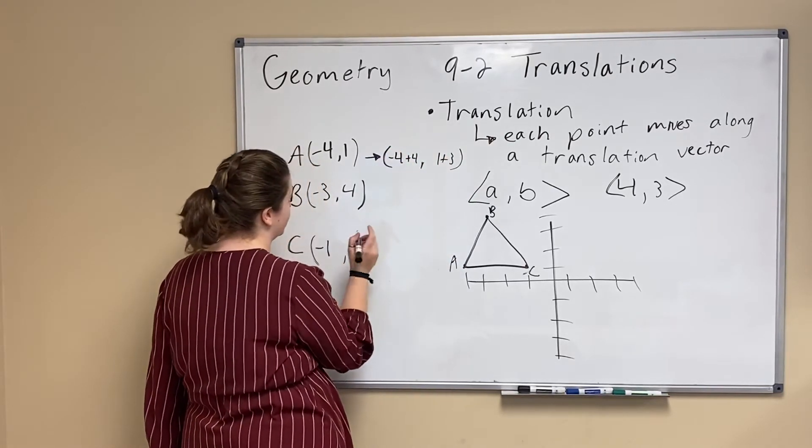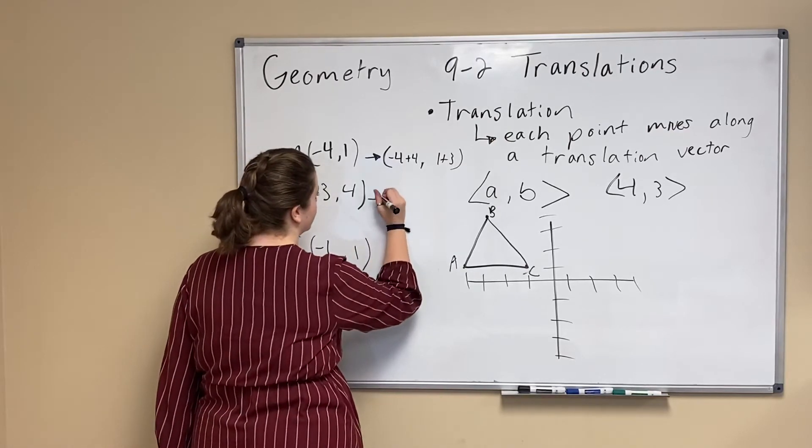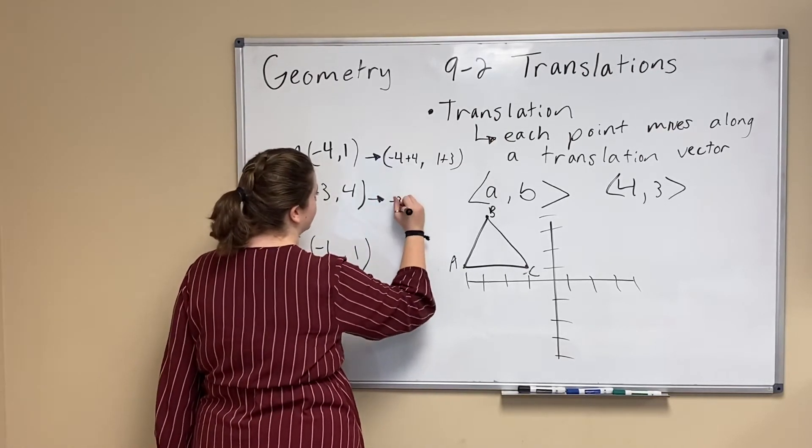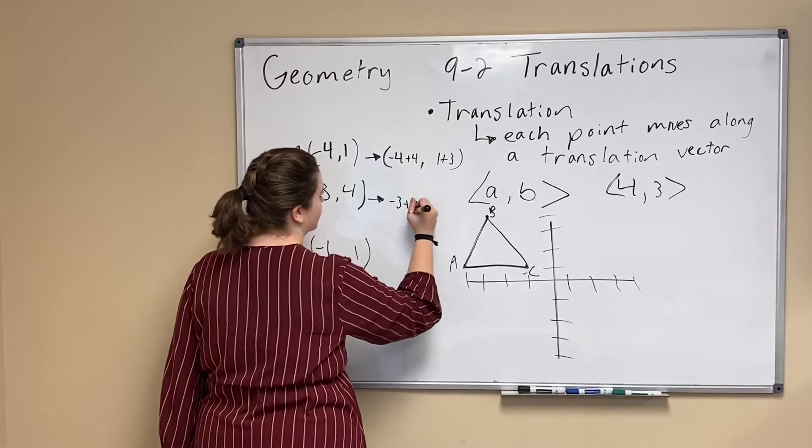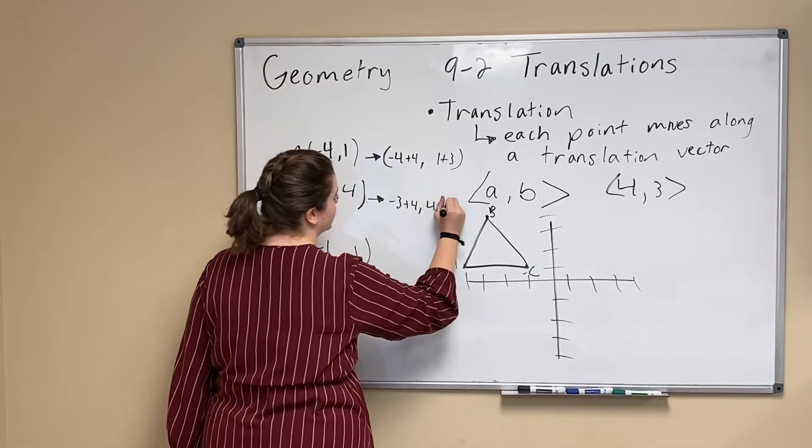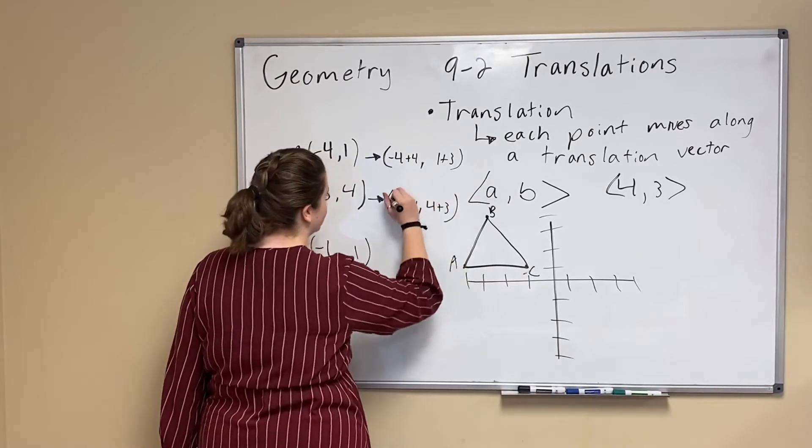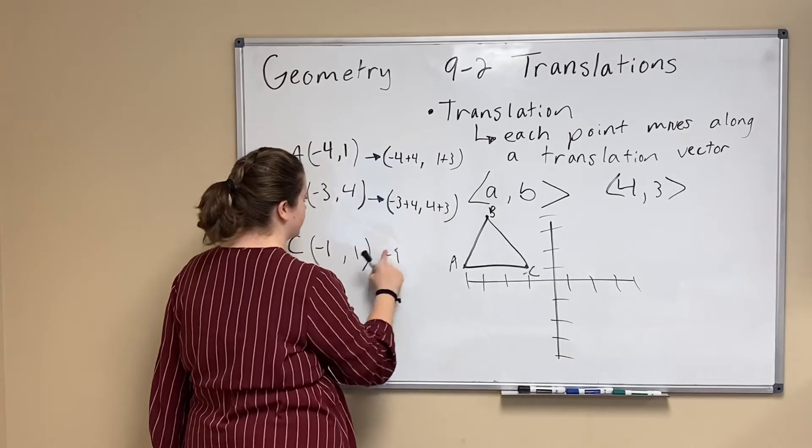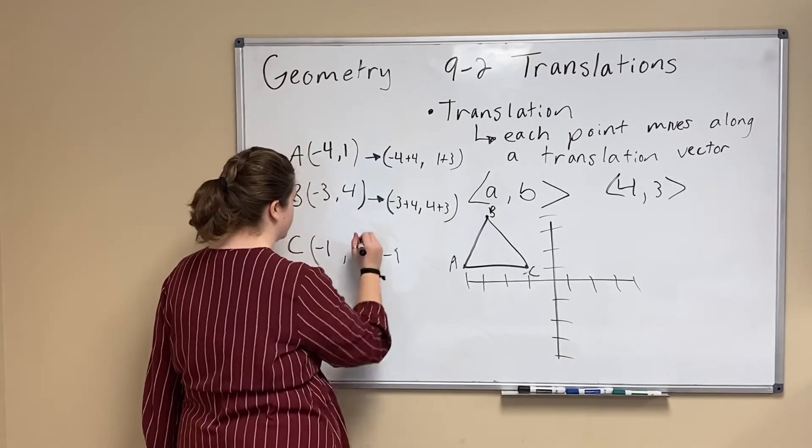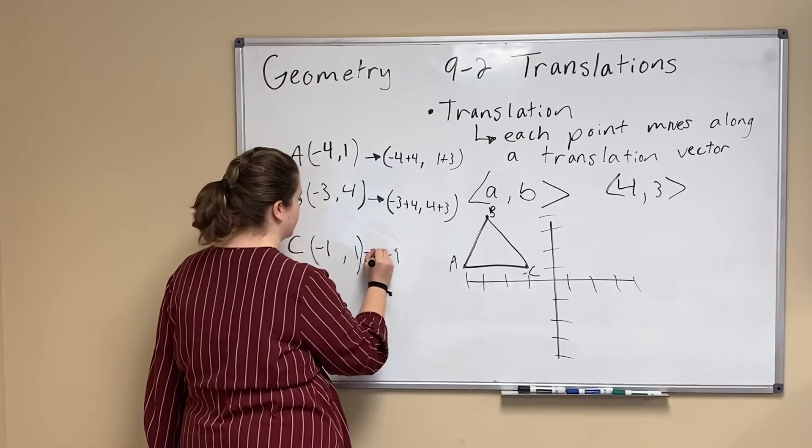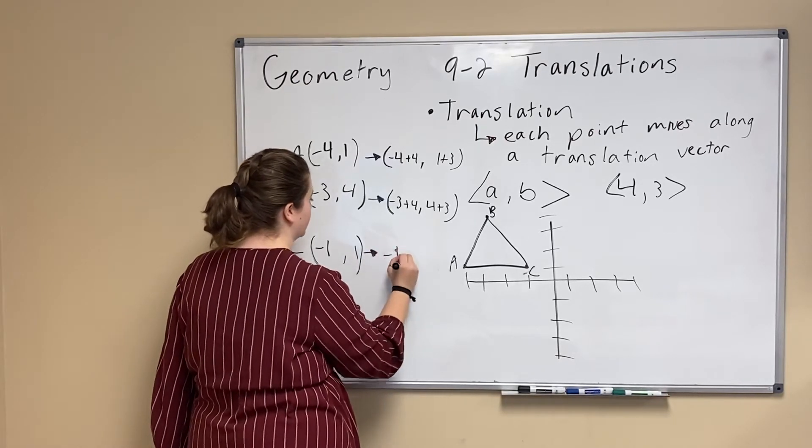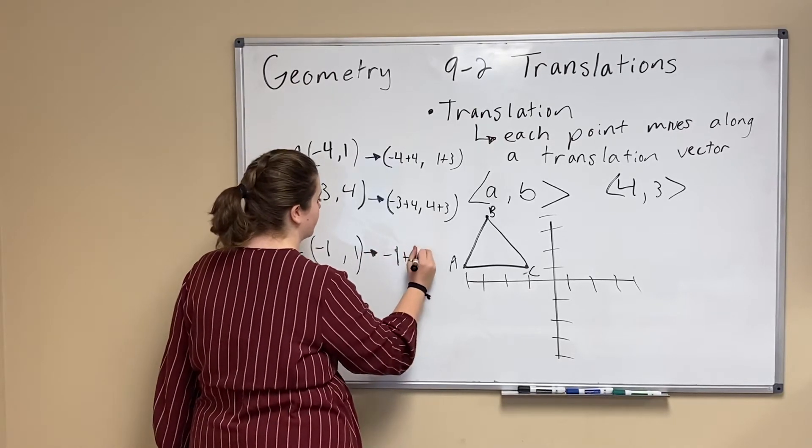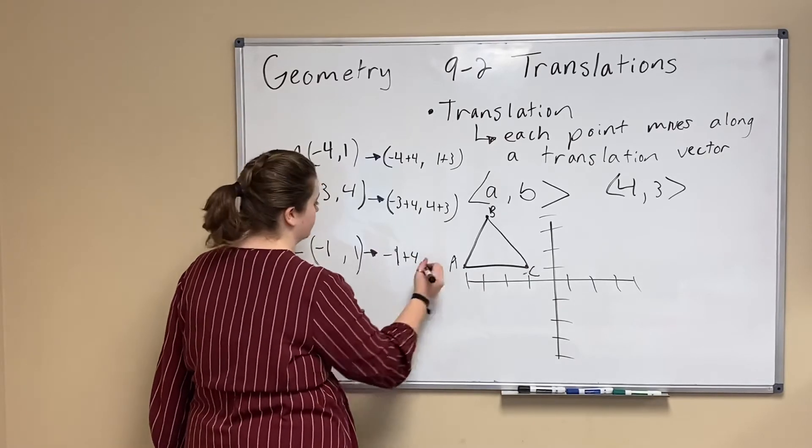We're going to do the same thing here. We're going to do -3+4 and 4+3. -1+4 and 1+3.